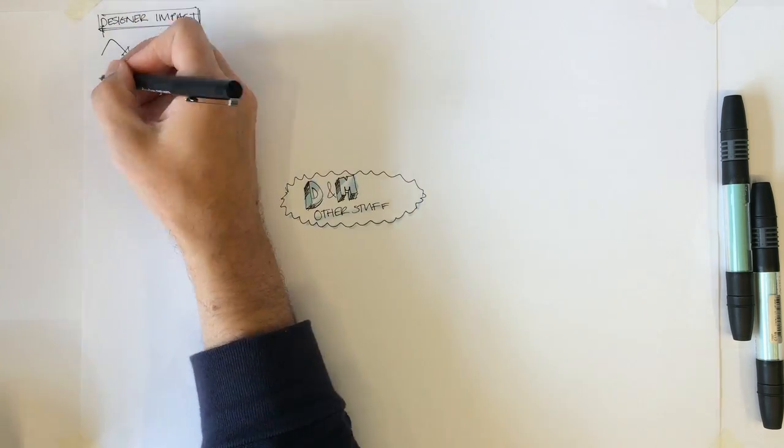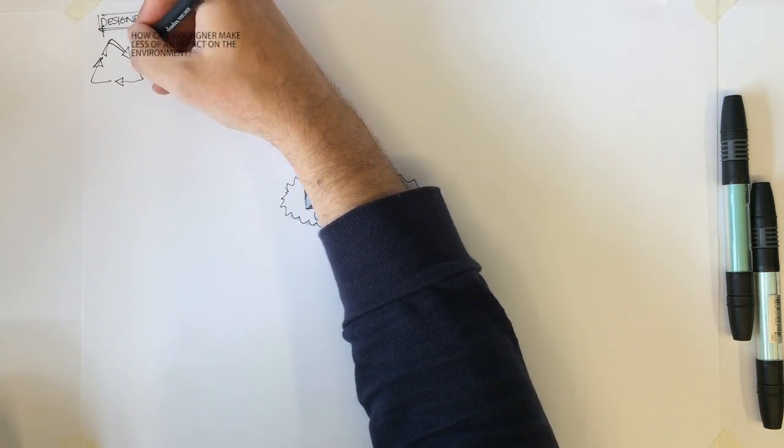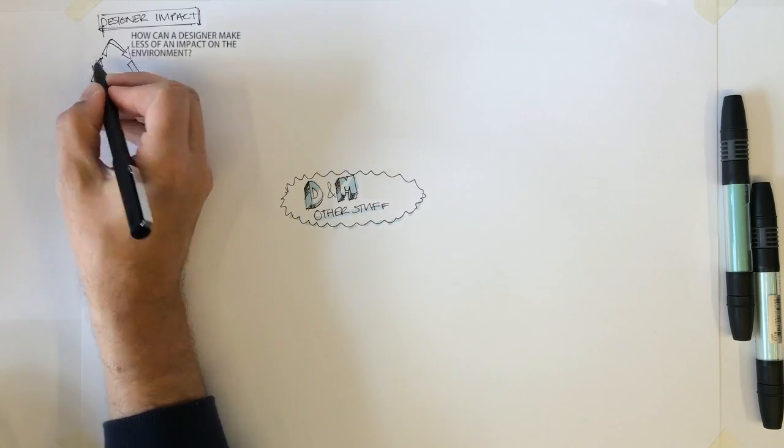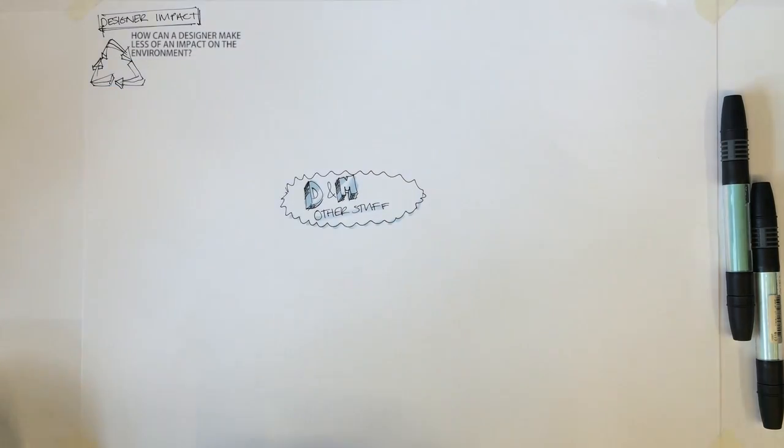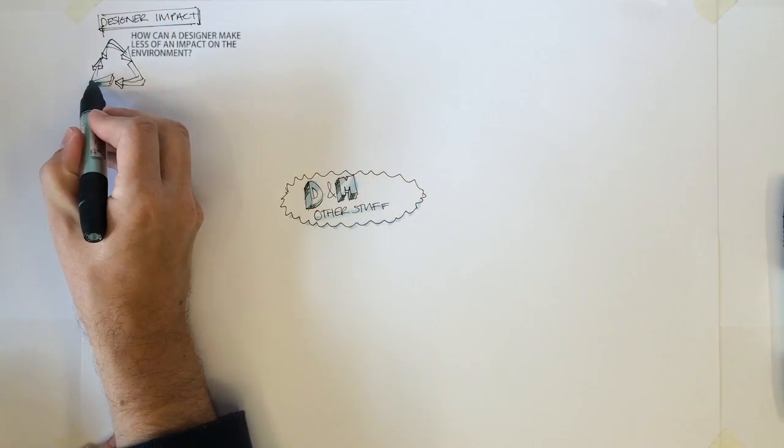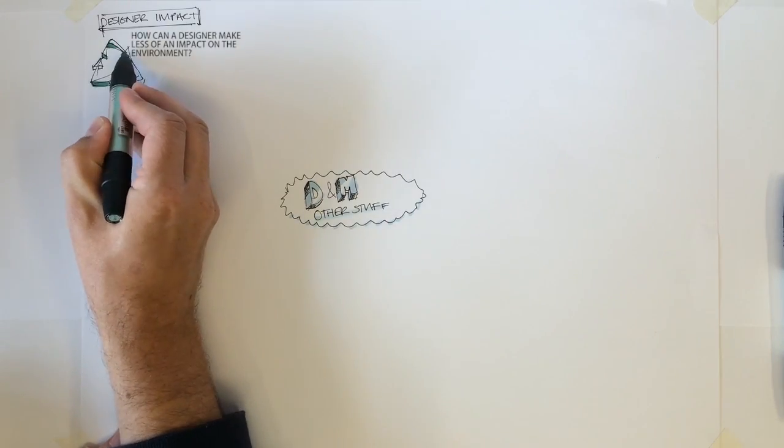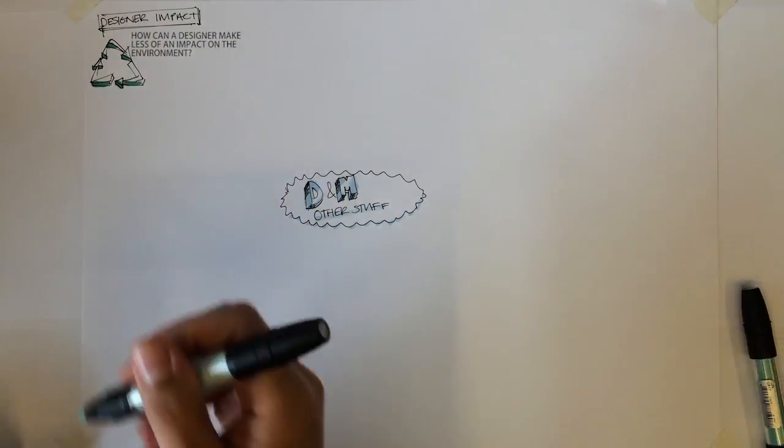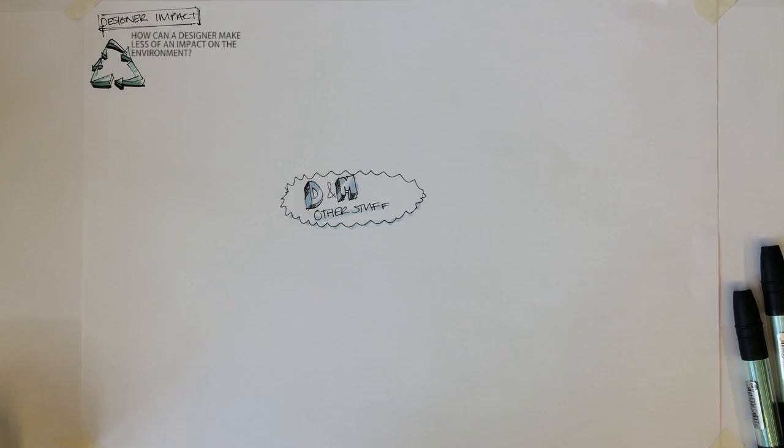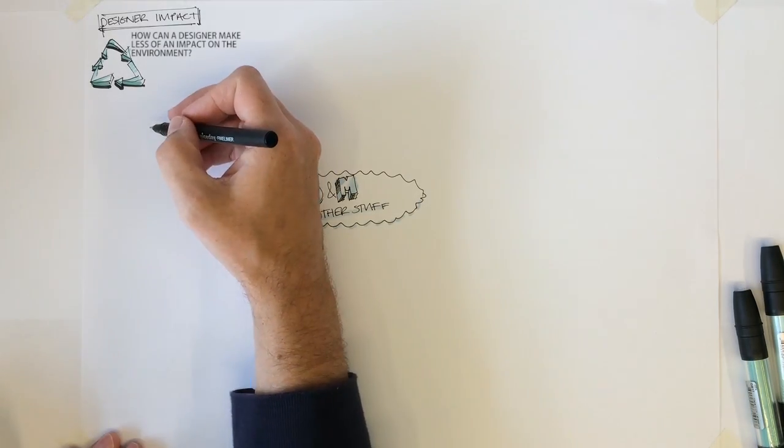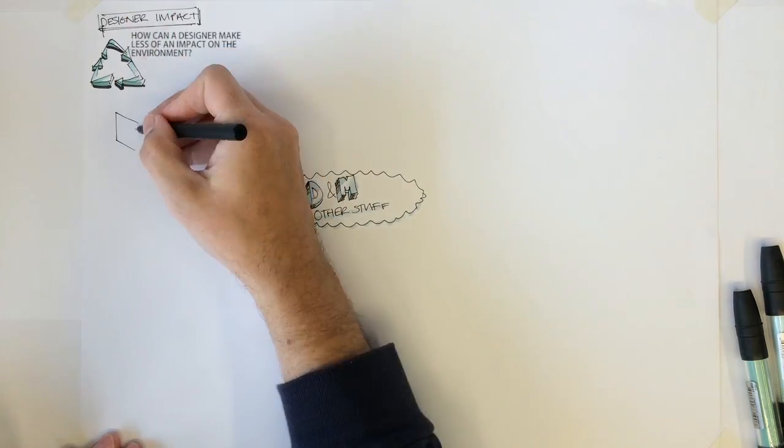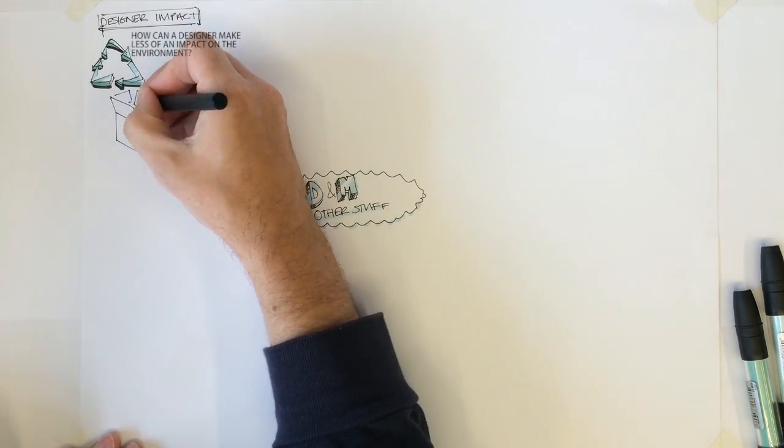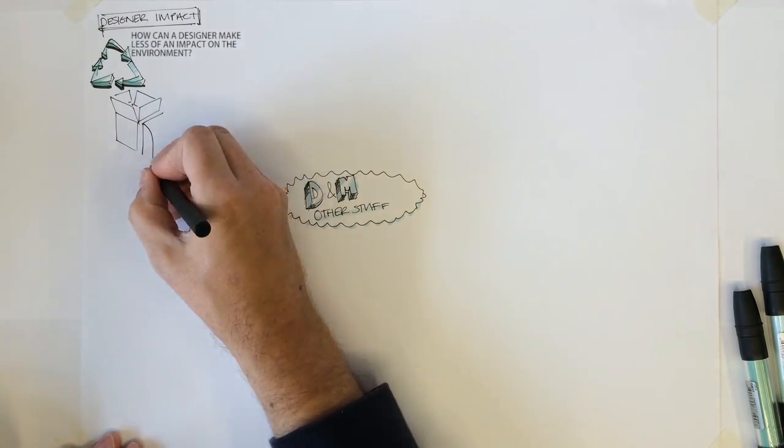The first part concerns designer impact on the environment. In an exam, you will be asked to discuss ways in which the designer can have a less harmful impact on the environment. Therefore, it will be important to structure a response in order to demonstrate your understanding. You will be familiar with this emblem: it stands for Reduce, Reuse, Recycle, and this will form a good basis for the structure of your answer.